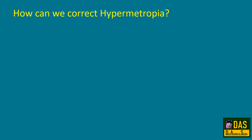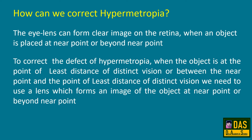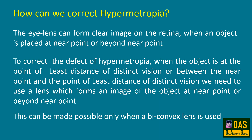How can we correct hypermetropia? The eye lens can form a clear image on the retina when the object is placed at near point or beyond. To correct hypermetropia when the object is at the point of least distance of distinct vision or between the near point and that distance, we need a lens that forms an image of the object at near point or beyond. This is possible only when a biconvex lens is used.